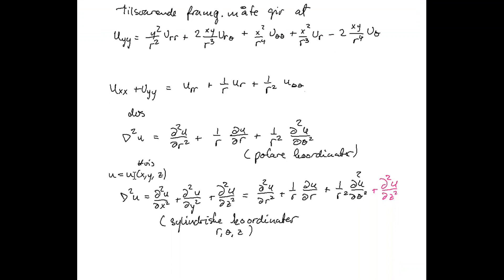If we add one more variable — that is, if we have three spatial coordinates x, y, and z — so that the unknown variable u is a function of these three coordinates, then it is straightforward to see that we only need to add the second derivative of u with respect to z. This is called cylindrical coordinates, when u is described by r, theta, and z.